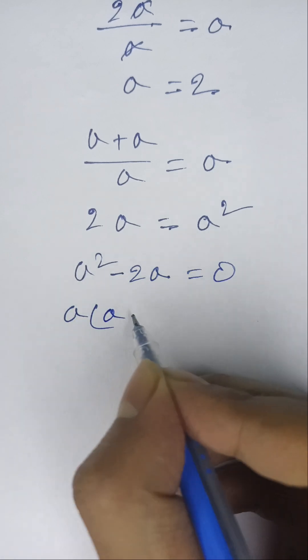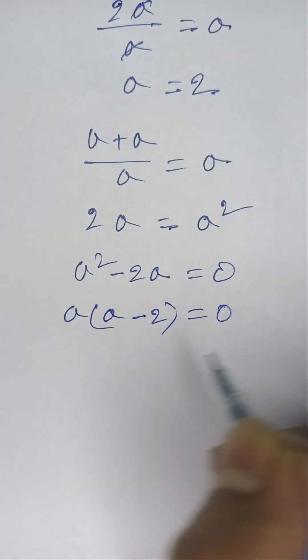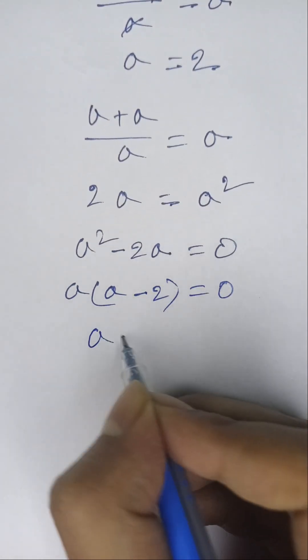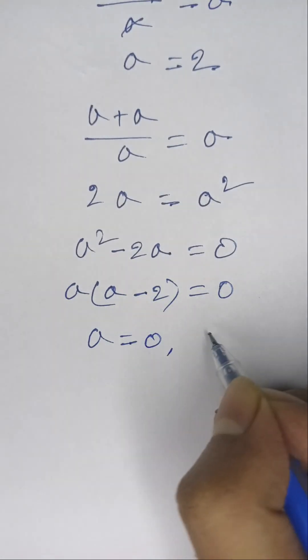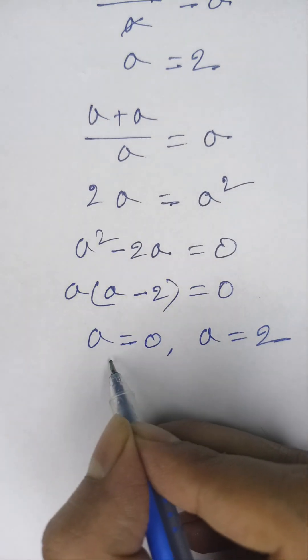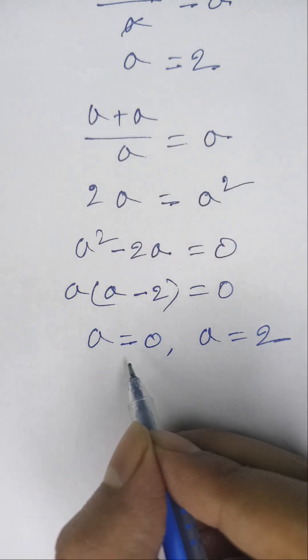Then a is common, so a(a - 2) = 0. Then a = 0 and a = 2, but a = 0 is not possible, so a = 2.